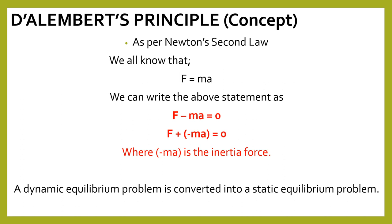For example, if the body is moving in the upward direction, the force responsible for moving the body is in the upward direction. So the inertia force will be in the downward direction if we take the equation as F minus ma equal to 0. You can also take the equation F plus minus of ma equal to 0, in which case the force responsible for movement and the inertia force should both be in the same direction.